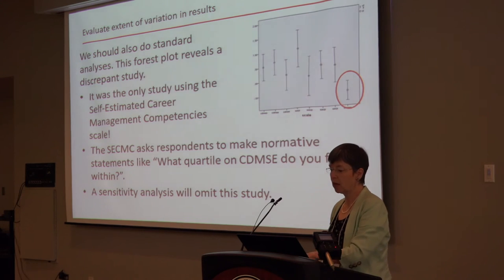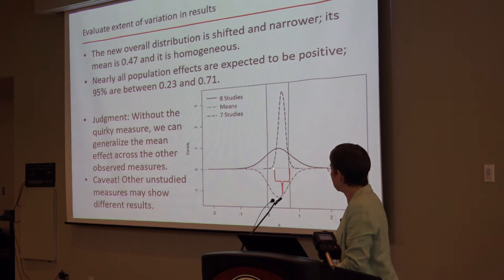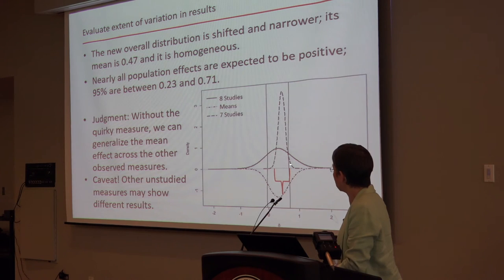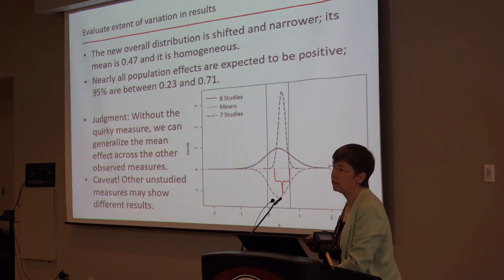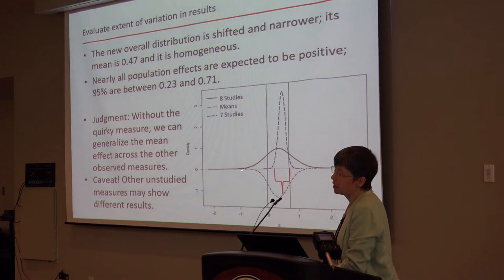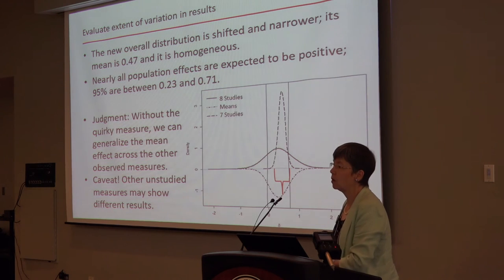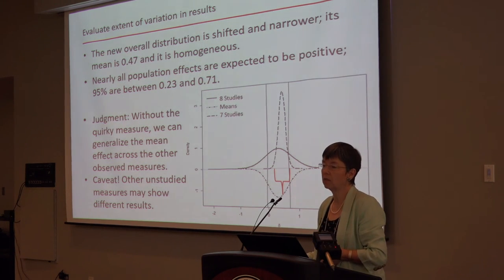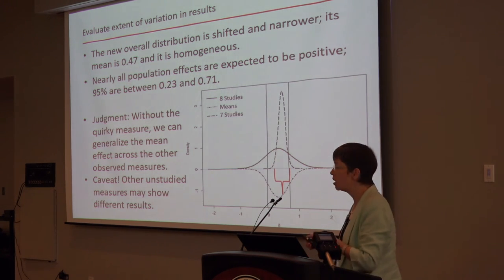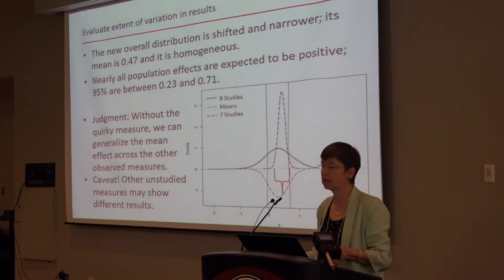I did a sensitivity analysis, and when I dropped out that study, it made a big difference. The new distribution of the seven studies is more reasonable, and it's a little safer to generalize — almost everything turns out positive. But even so, this plausible values interval where 95% of the effects in the population should lie is still pretty broad: it goes from 0.23 to about 0.7. Getting an effect size of 0.23 and 0.7 are probably not the same to you. There's still some variation, even if it's not statistically detectable with just seven cases.